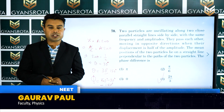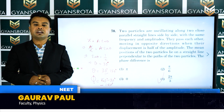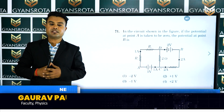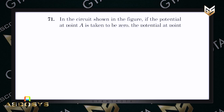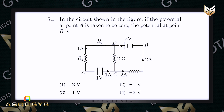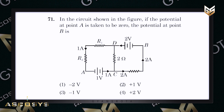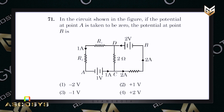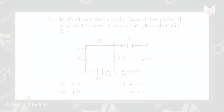Let us move to the next question, that is question number 71. It says that in the circuit shown in the figure, if the potential at A is taken to be zero, the potential at B will be how much?